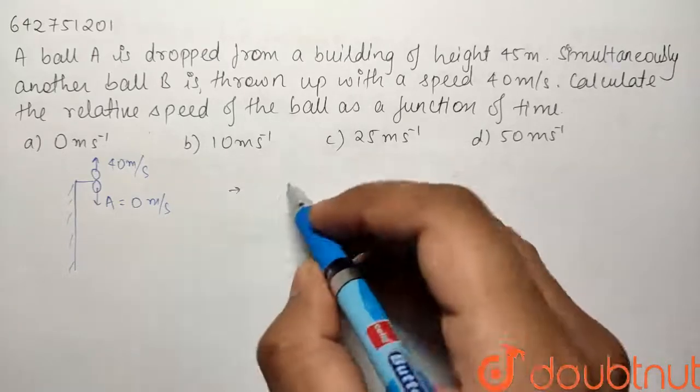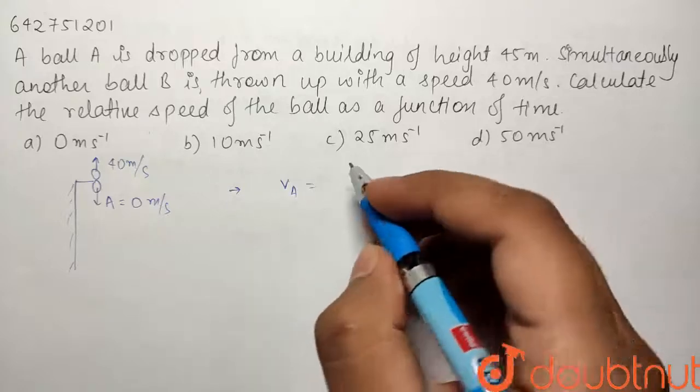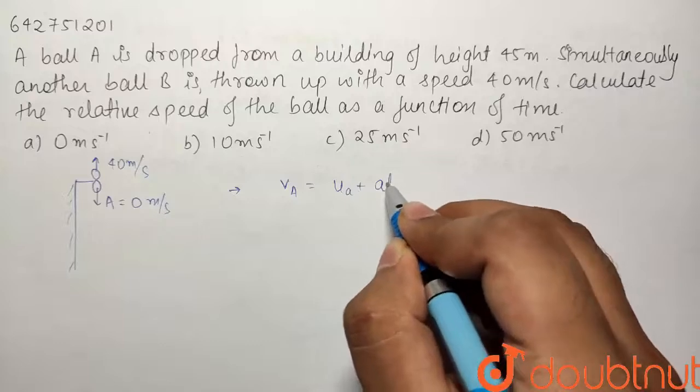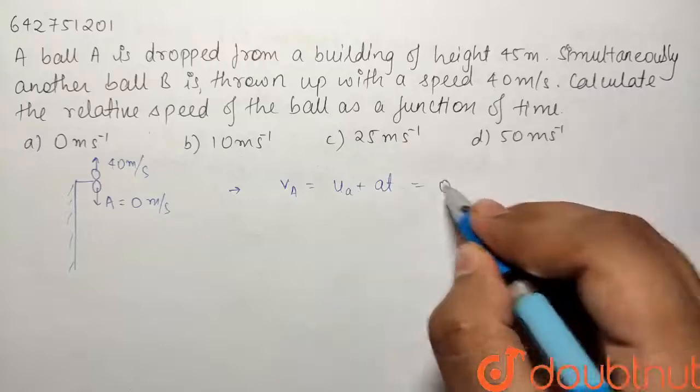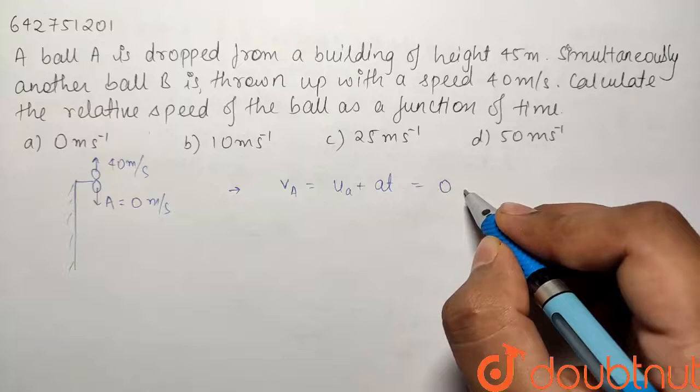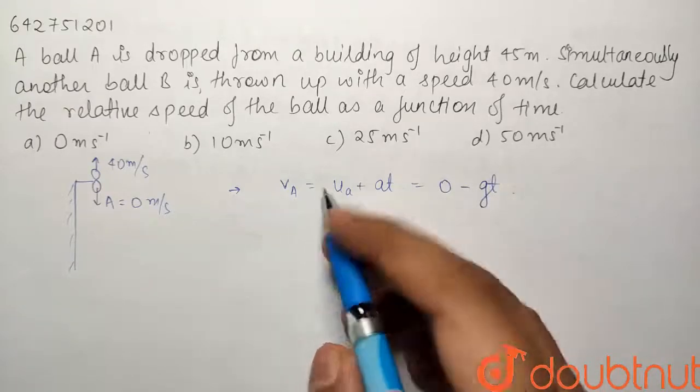So if I talk about velocity of Va after time t, it will be equal to initial velocity Ua plus At. Now here Ua is equal to 0 and our acceleration is equal to minus G because G is in downward direction. So it will be equal to minus Gt. So this will be our function of Va.